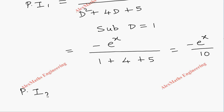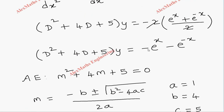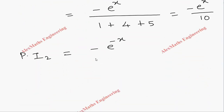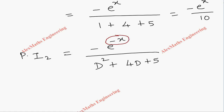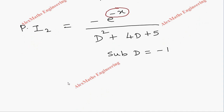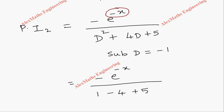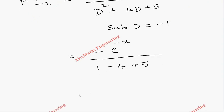For Particular Integral 2, we take -e^(-x) divided by (D² + 4D + 5). We substitute d = -1 (the coefficient of x in the exponent). This gives -e^(-x) / ((-1)² + 4·(-1) + 5) = -e^(-x) / (1 - 4 + 5) = -e^(-x) / 2.